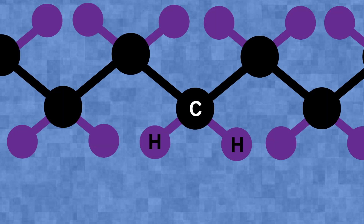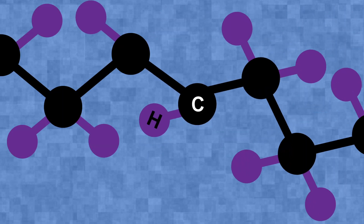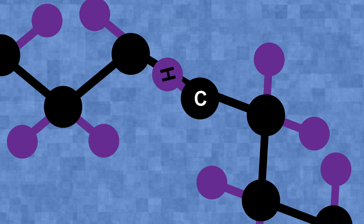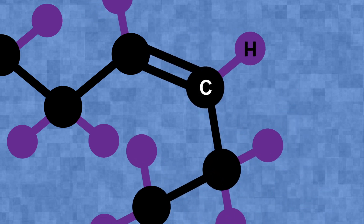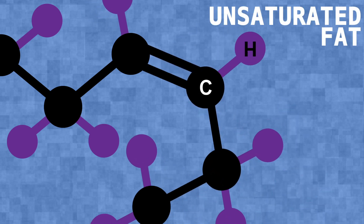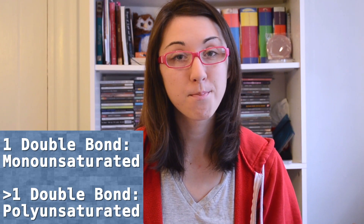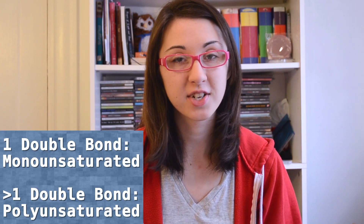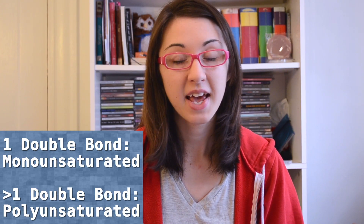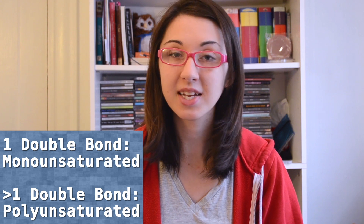Now it's possible that two of those carbon atoms could double bond to each other. The formation of this double bond would mean that some of the hydrogens would disappear. Thus, the fat would now be an unsaturated fat. If there's only one double bond, it's called a monounsaturated fat, and if there are more, it is called a polyunsaturated fat.